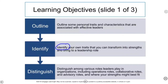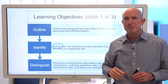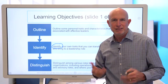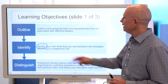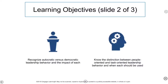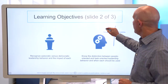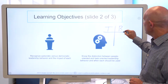We want to distinguish among various roles that leaders play in organizations — the operational role, the collaborative role, and the advisory role — and which kinds of careers fit each of those types and which is exemplary of your strengths as a potential leader. We also want to recognize autocratic versus democratic leadership behavior and the impact of each on leadership effectiveness. Blake and Mouton developed a very famous managerial grid that looks at task and relationship.